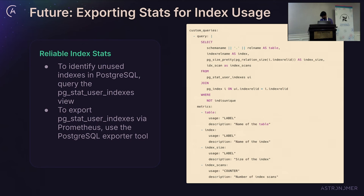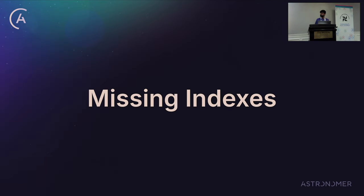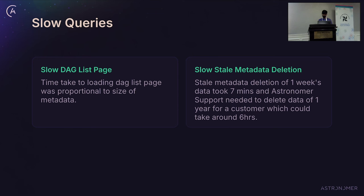Quick recap: so far we have covered some best practices around DAG writing and unused indexes. Indexes that are not getting used occupy space and eventually cause high resource utilization, especially CPU and sometimes memory because the indexes are getting loaded into memory. The next part we are going to cover is two more database topics: missing indexes, and table and index bloats. There are often cases where adding a few indexes might actually optimize your database performance.